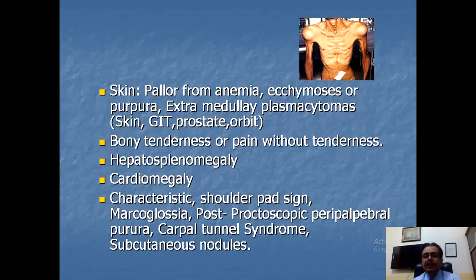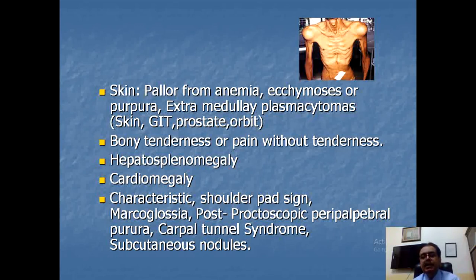Sometimes the patient has extramedullary plasmacytomas, with common sites being the skin, GI tract, prostate, and orbit. They can also be found on the back, limbs, and abdomen. Personally observed during medical unit experience, they appear as swellings on different parts of the body and may be mistaken for lipomas or neurofibromas — but they are actually plasmacytomas.